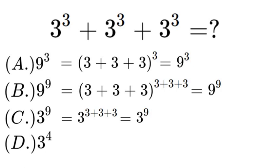So we could pull that out and say it's 3 to the power of 3 times 1 plus 1 plus 1, which in turn would be 3 to the power of 3 times 3, which is to the power of 1.